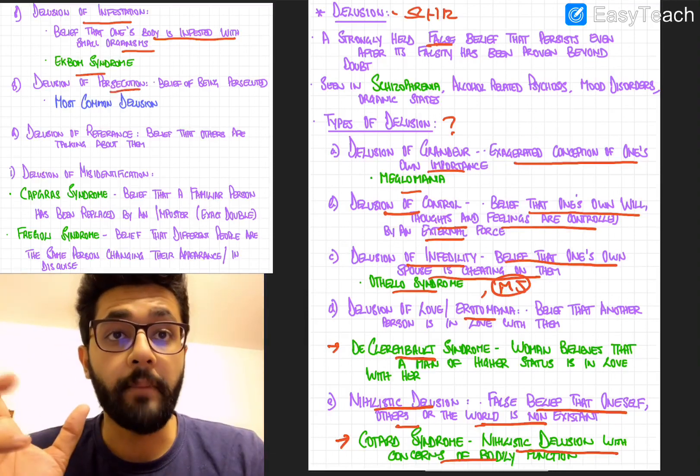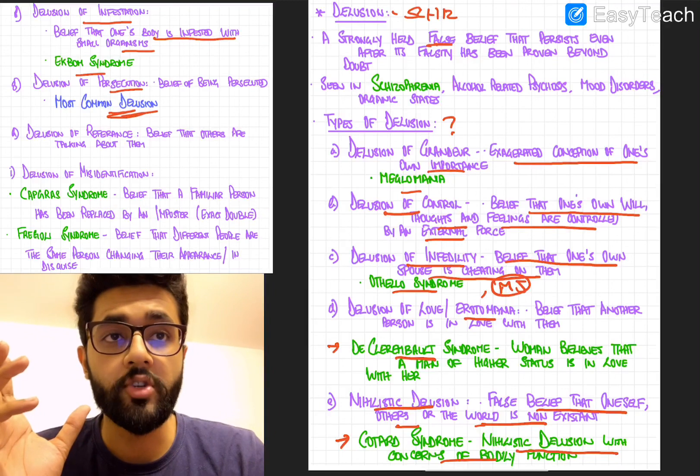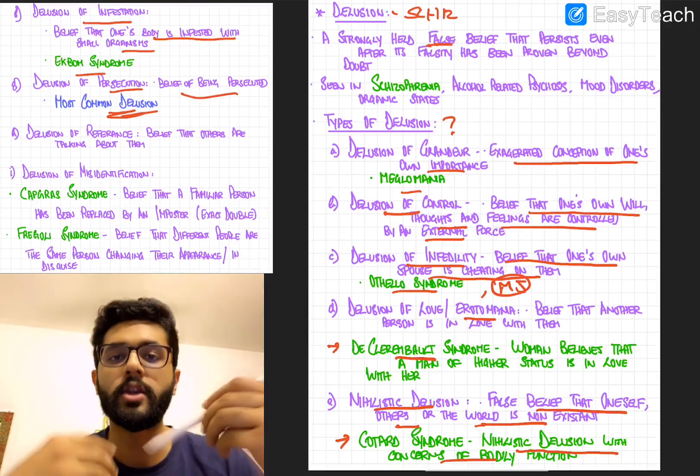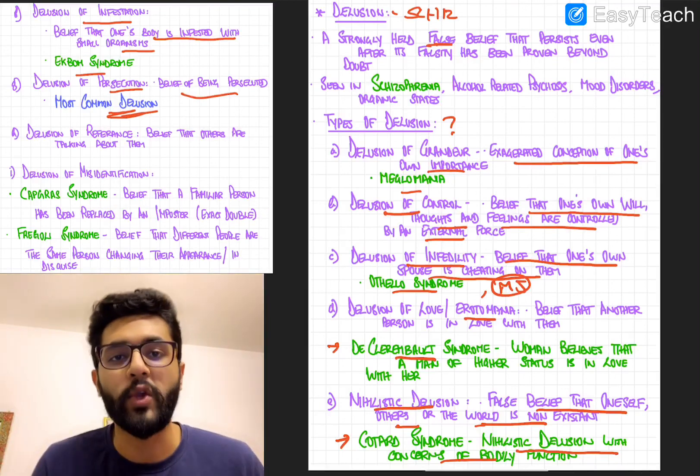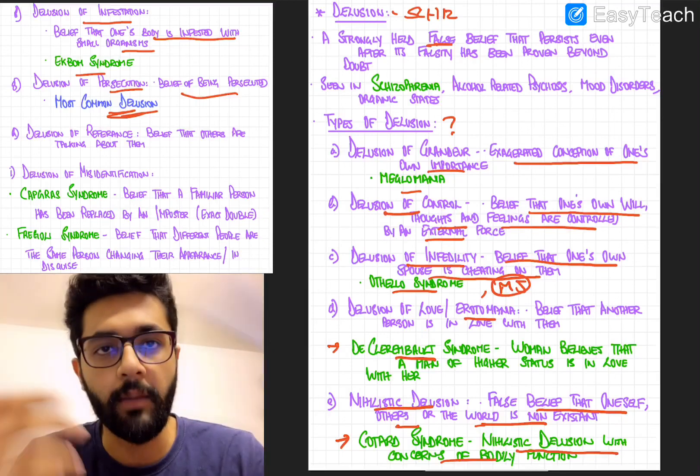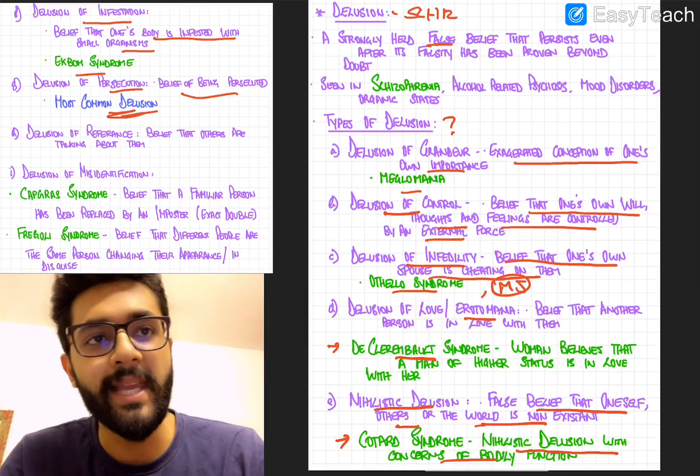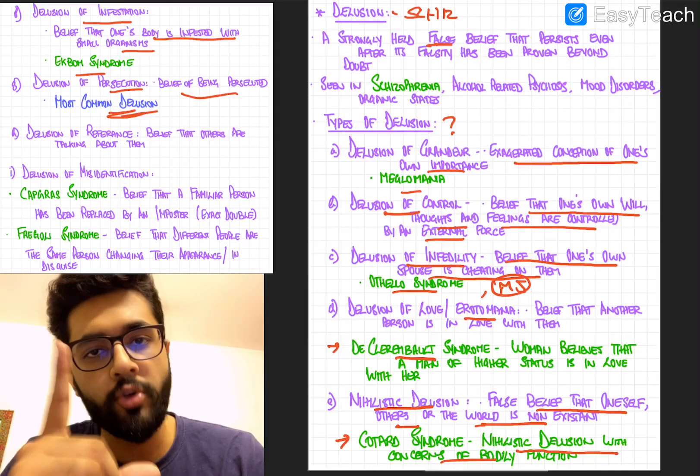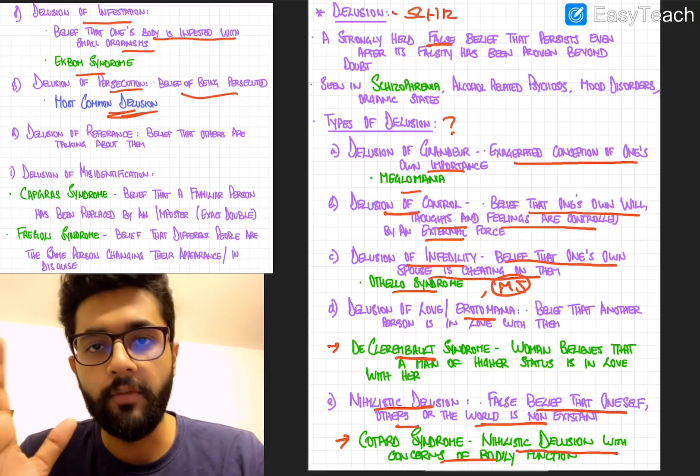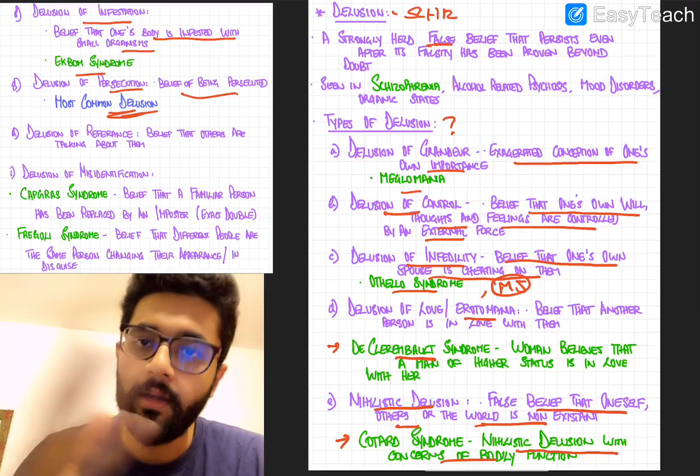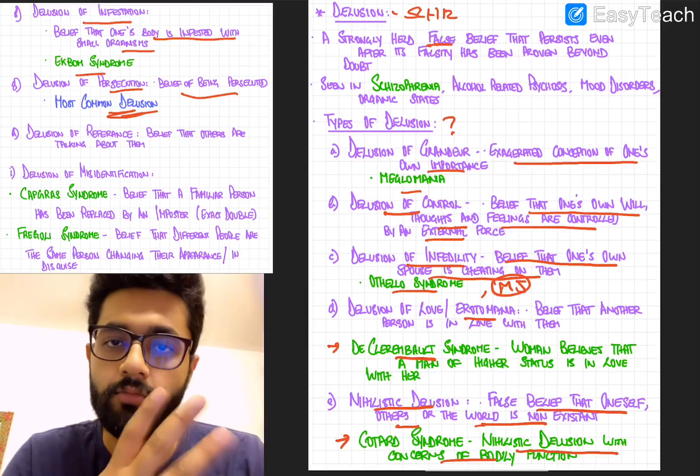Next, you have the delusion of persecution, which is the most common delusion and is a belief that the individual is being persecuted or everyone is behind or trying to catch a certain person or the affected person. So delusion of persecution is a belief of being persecuted and it is the most common delusion. Very beautifully portrayed in the movie, A Beautiful Mind based on an individual with schizophrenia, John Nash.